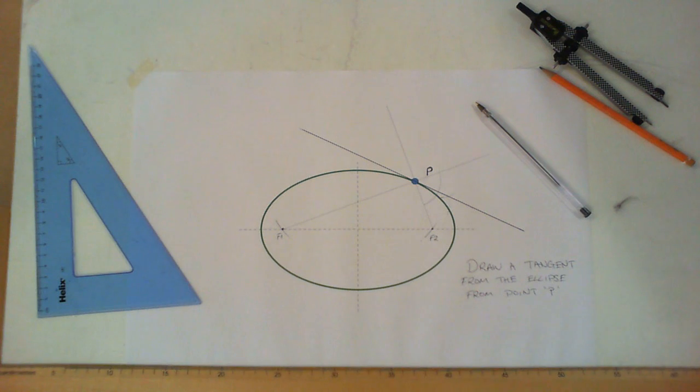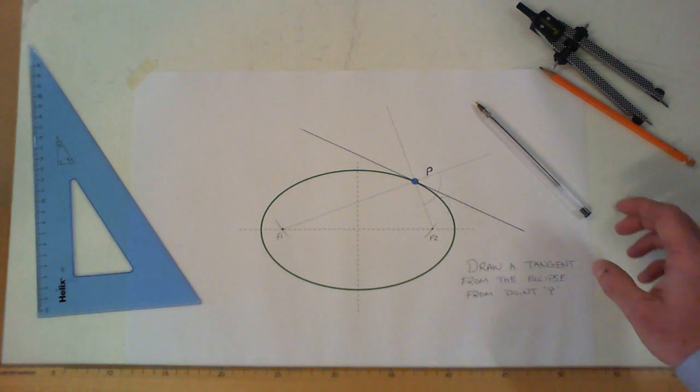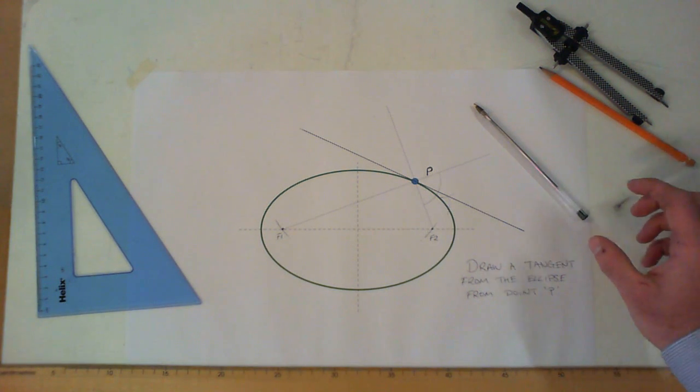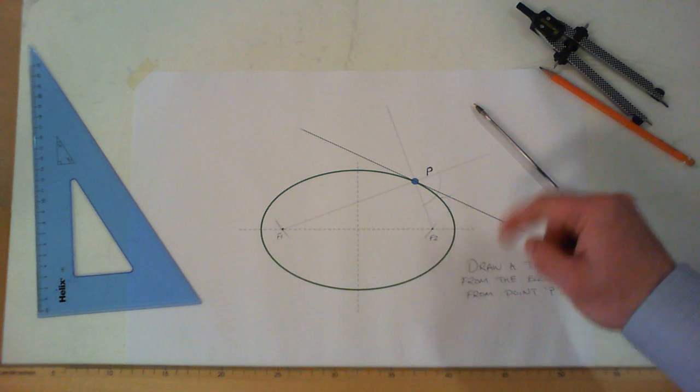Like I said, there's another video which I link that shows you how to draw a tangent if the point is given on the outside of the curve and you have to draw a tangent down.